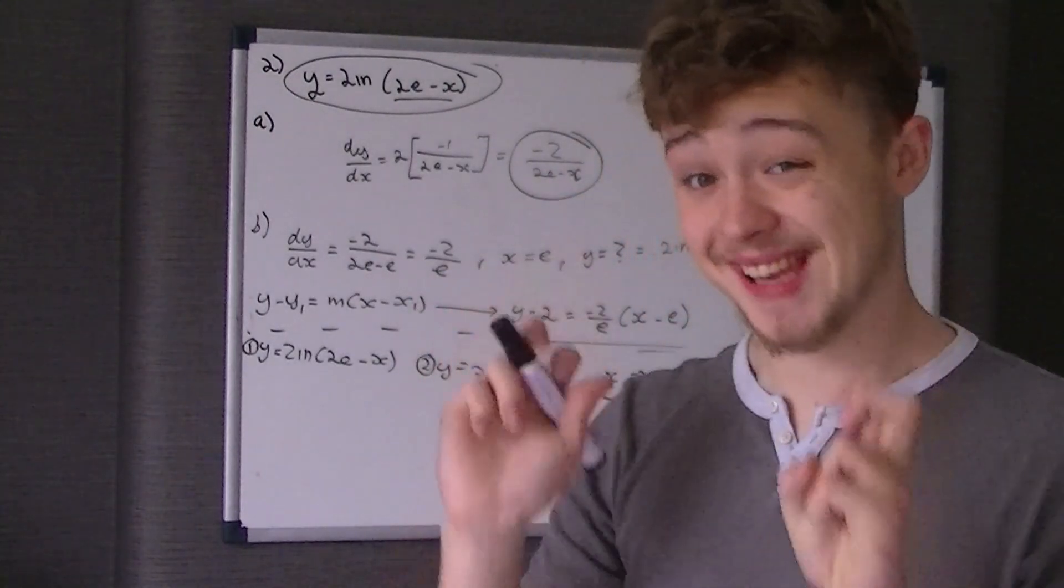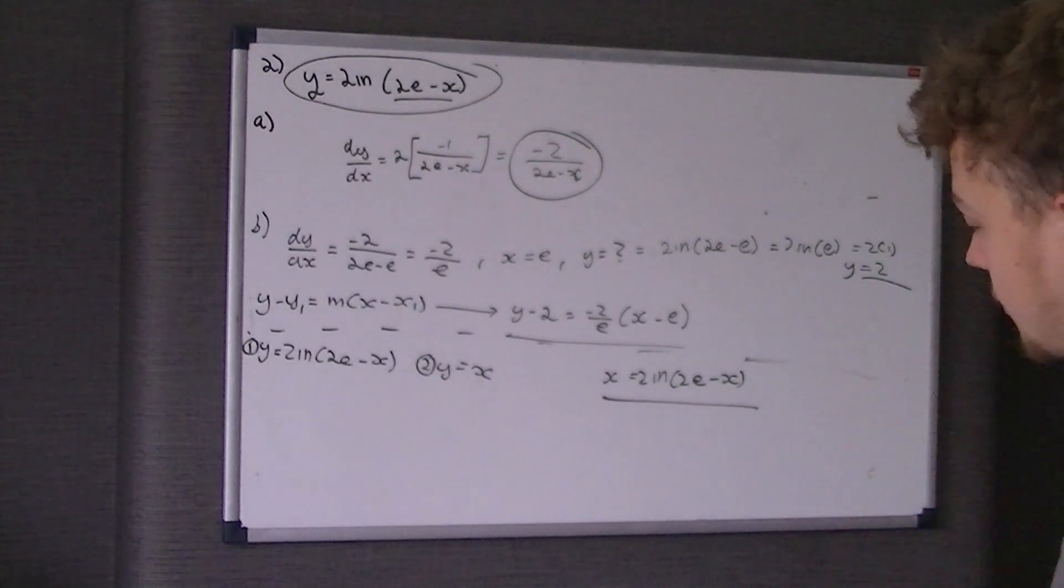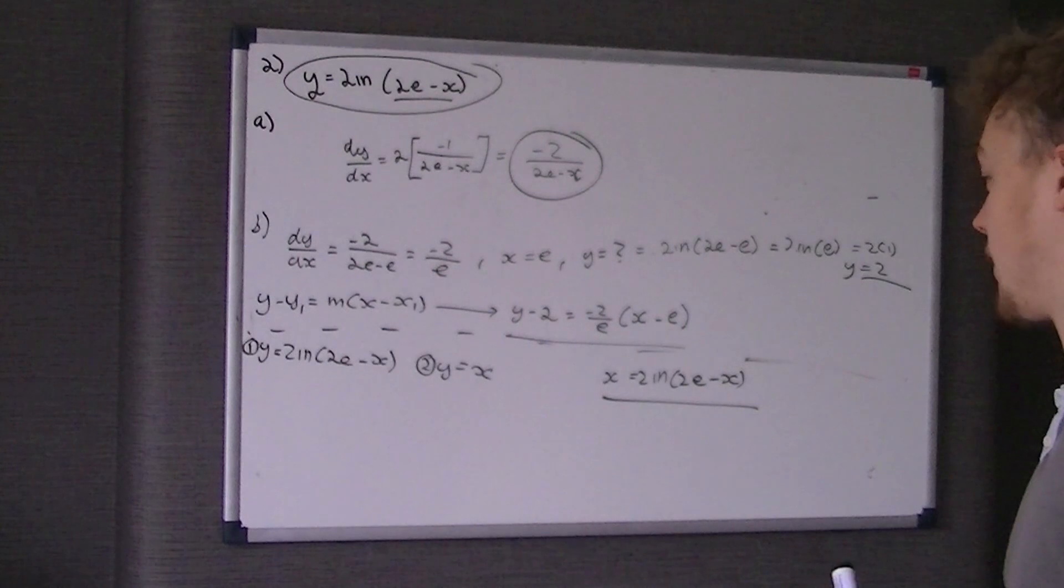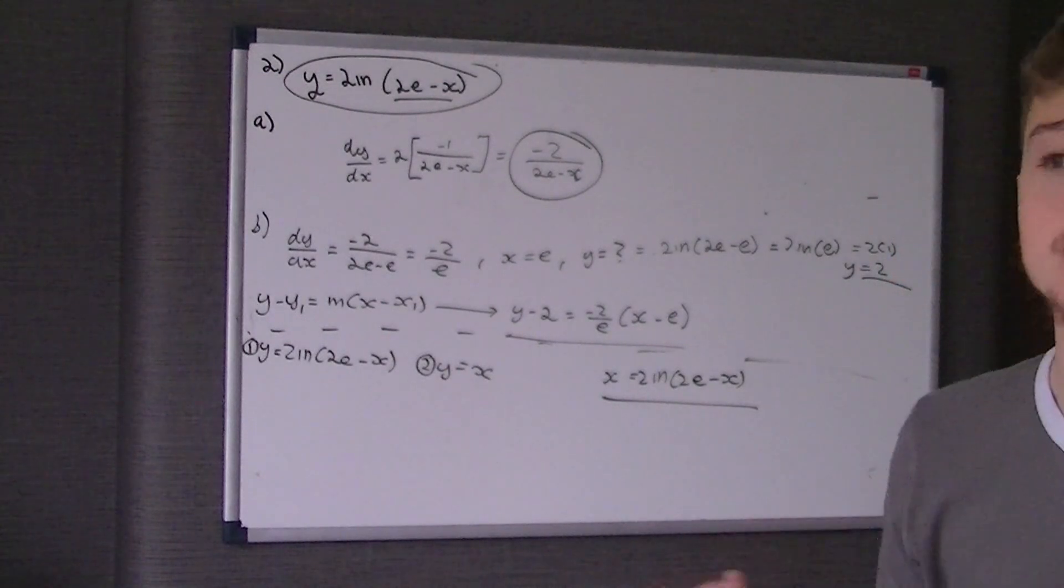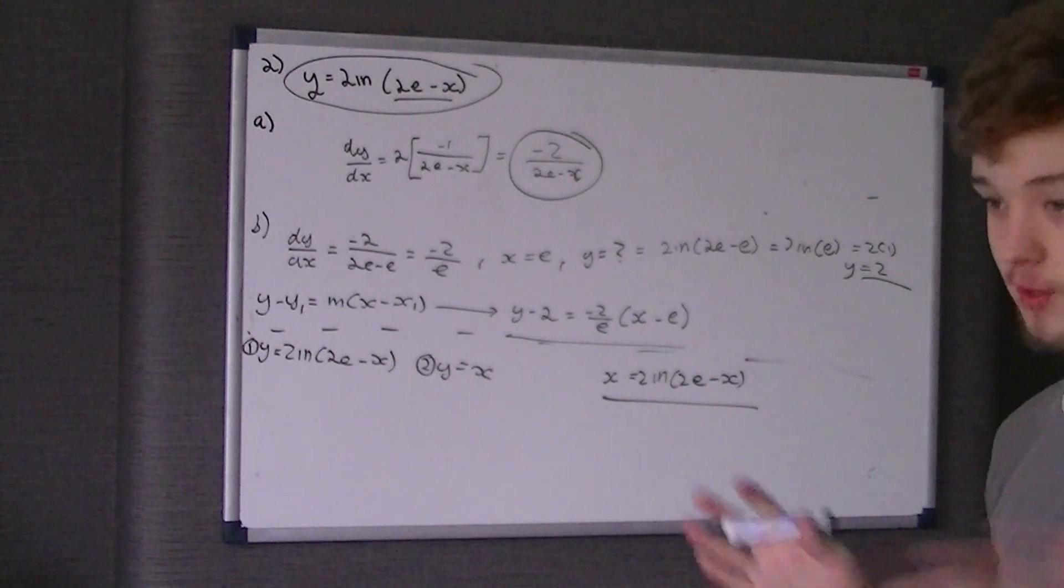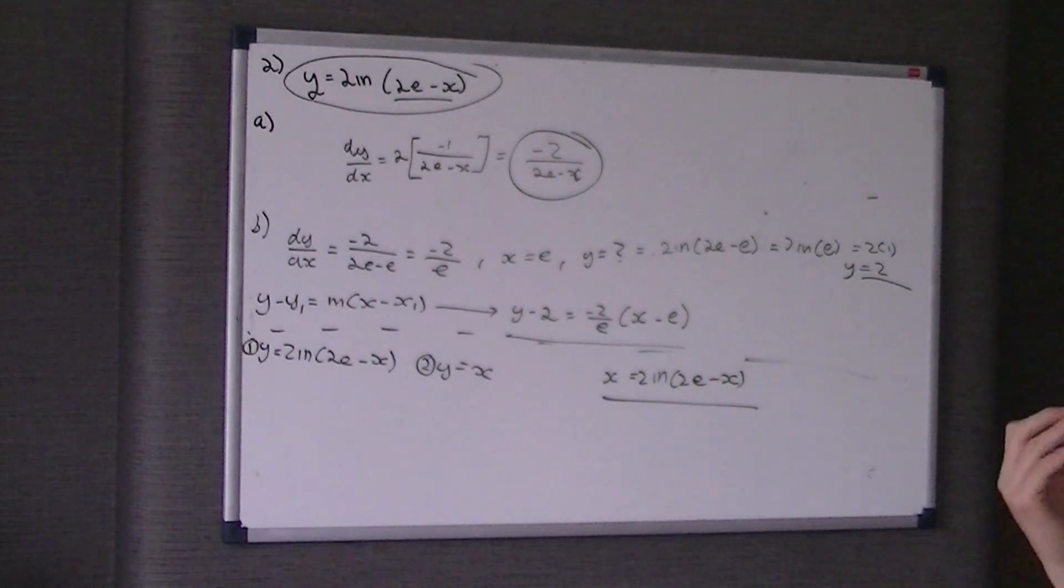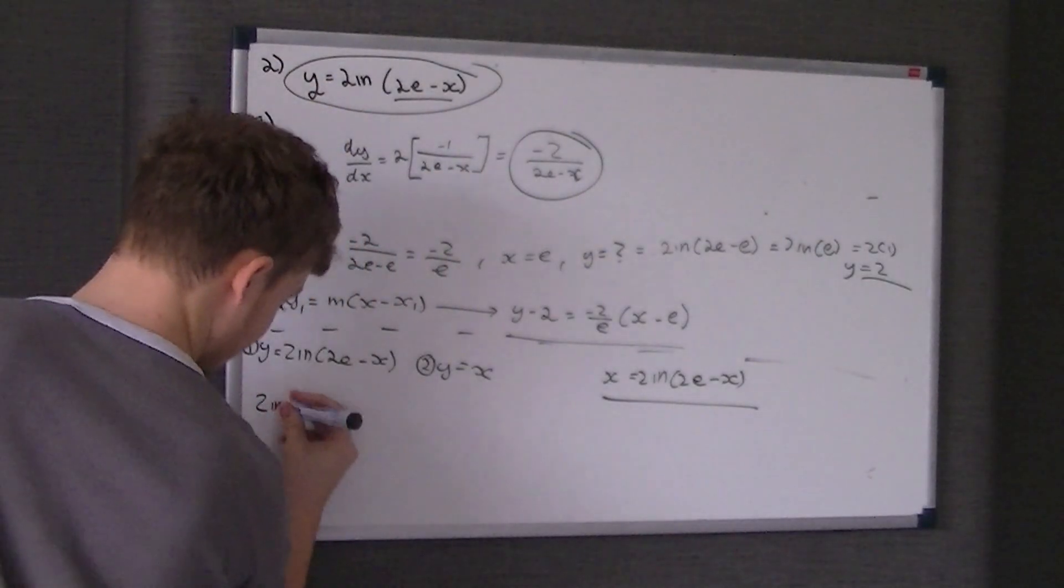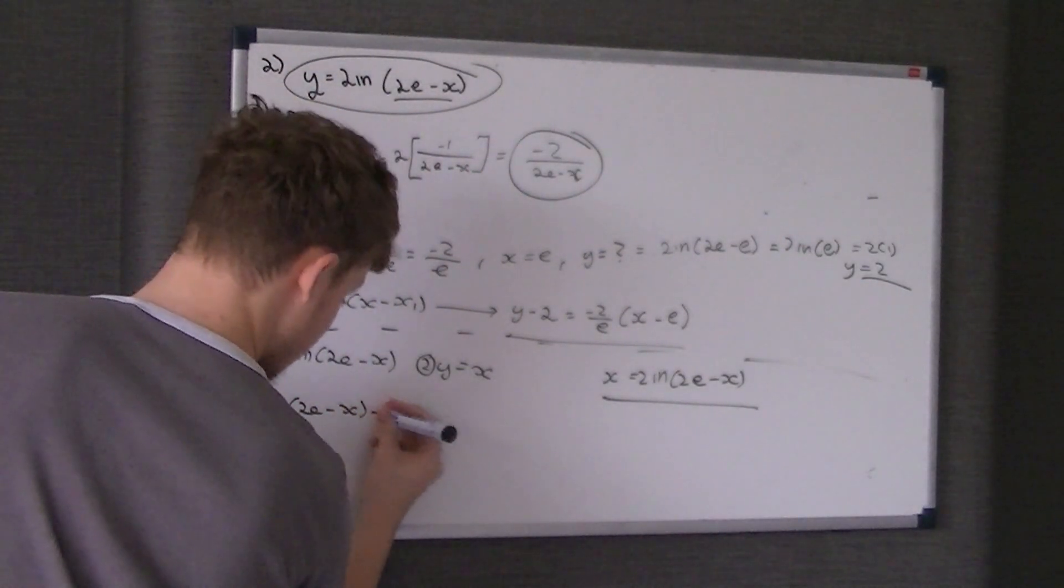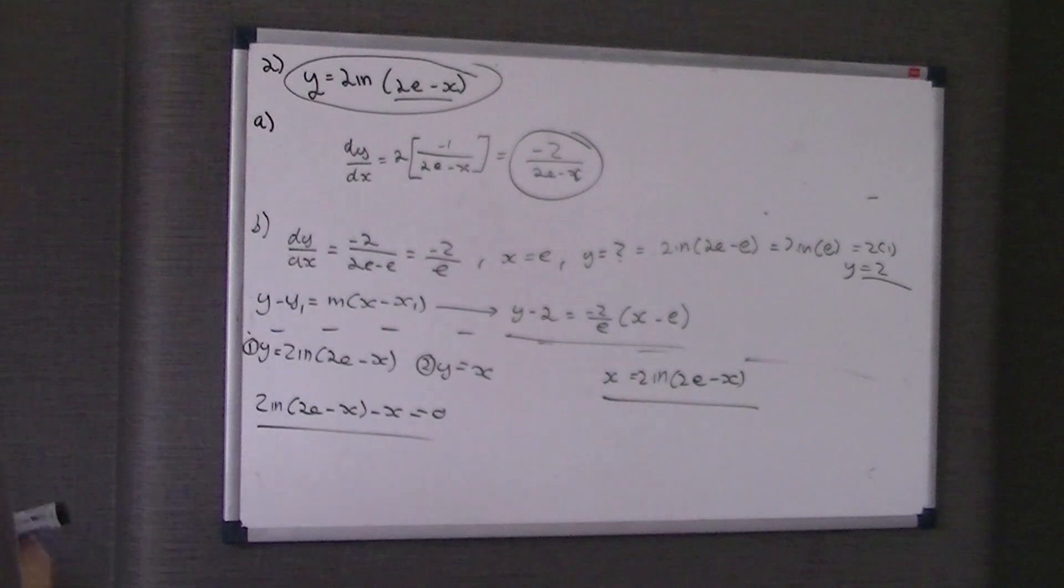How would you prove if it cut through the x-axis? So what you do is you do a change of sign. We can't do a change of sign if x is equal to 2 ln of 2e take x because we don't know what x is. So what we're going to do is make this equal to 0. Therefore 2 ln of 2e take x take x is equal to 0.